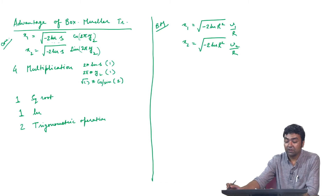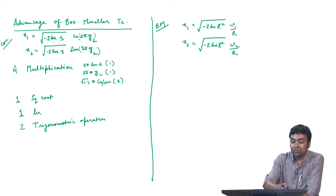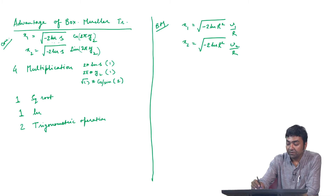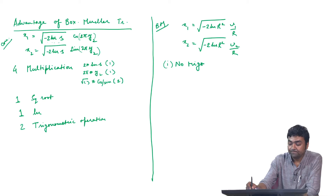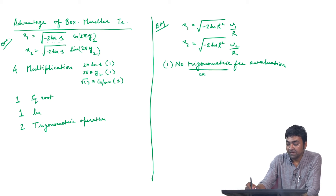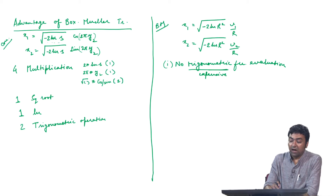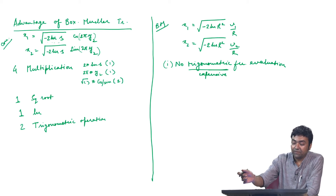Now let us look at the Box-Muller transformed version. The first key difference is that there are no trigonometric functions here — no trigonometric operations at all. Remember, this is the most expensive part, and we are getting rid of these two trigonometric operations.